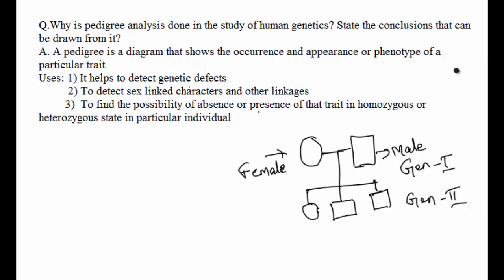You can see the figure here - it is a diagram that shows the linkage between generations. Females are represented by circles and males are represented by squares. The line which connects the male and female represents the mating between them. The vertical line and brackets indicate the offspring that have come from generation one.